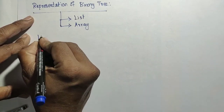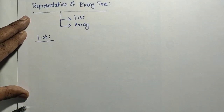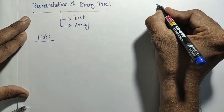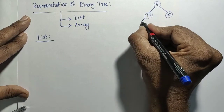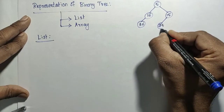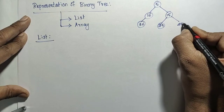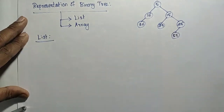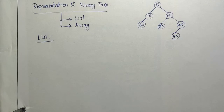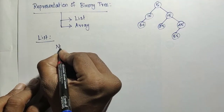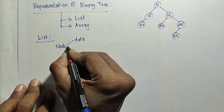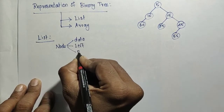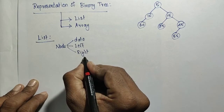First: list representation of the binary tree. For the list representation, consider one tree with nodes 5, 10, 15, 30, 25, 45, and 55. In list representation, each element is called a node. The node contains three fields: data, left (address of the left subtree), and right (address of the right subtree).